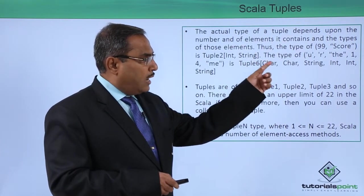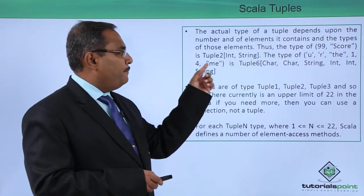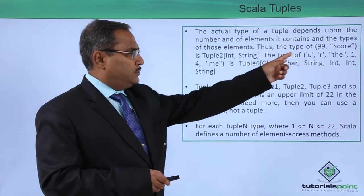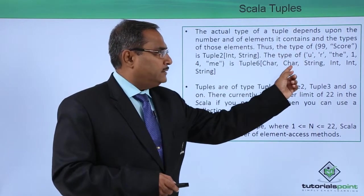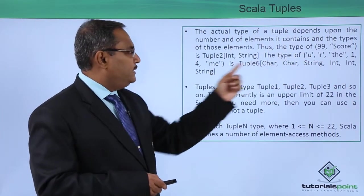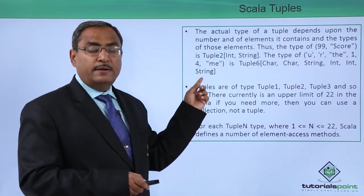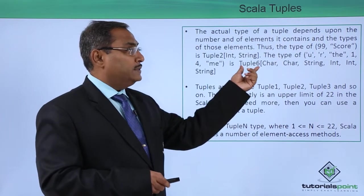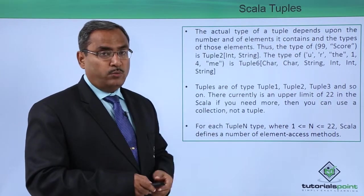The type of ('u', 'r', "the", 1, 4, "me") is Tuple6. 'u' is Char, 'r' is Char, "the" is String, 1 is Int, 4 is Int, and "me" is String. So that is Tuple6. In this way we have multiple different ways to declare tuples.